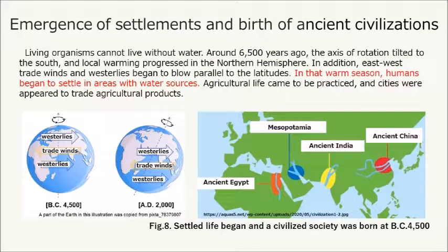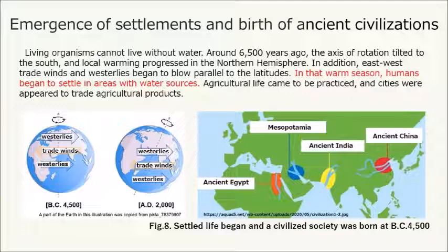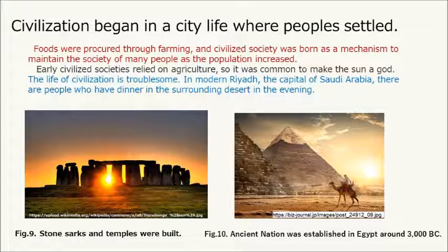Regarding the emergence of settlements and birth of ancient civilizations: living organisms cannot live without water. Around 6,500 years ago, the axis of rotation tilted to the south and local warming progressed in the northern hemisphere. Trade winds and westerlies began to blow parallel to the latitudes. In that warm season, humans began to settle in areas with water sources. Agricultural life came to be practiced, and cities appeared to trade agricultural products. Civilization began in city life where people settled, and civilized society was born as a mechanism to maintain large populations as they increased.